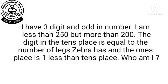I have 3 digits and am odd in number. I am less than 250 but more than 200. The digit in the 10th place is equal to the number of legs a zebra has, and the 1's place is 1 less than the 10th place. So, who am I?